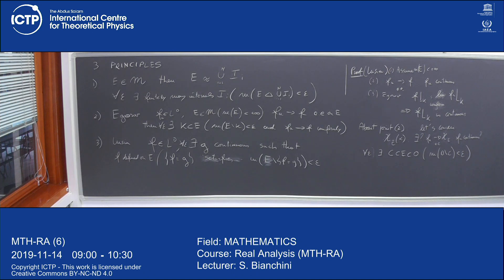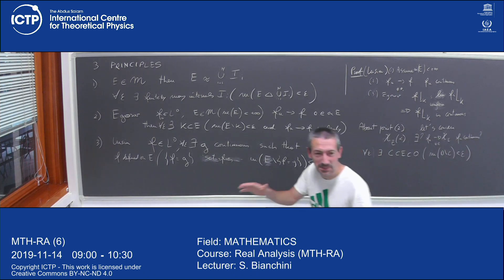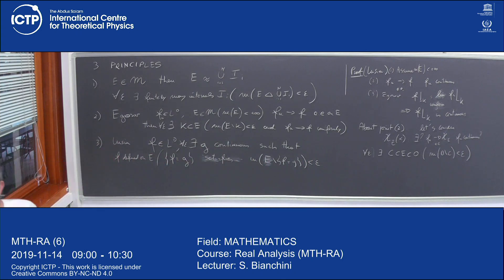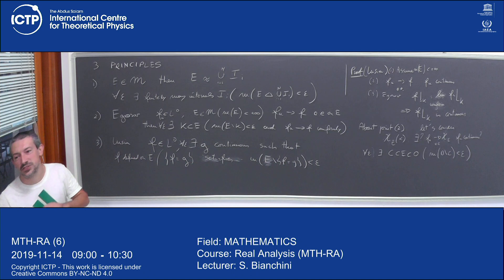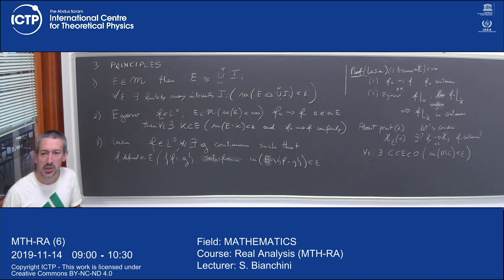Can you build a continuous function? In R we have good topological properties. If I give you two disjoint closed sets, there exists a continuous function which separates them — equal to 1 on one and 0 on the other. This is Urysohn's lemma, which holds for normal (T4) spaces. In R everything you can ask is fine.